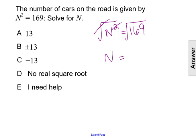Well, think about the context of this problem. We're talking about the number of cars on the road. Can you have a negative number of cars on the road? No, you can't have negative two cars on the road. You could either have zero or positive numbers of cars on the road.